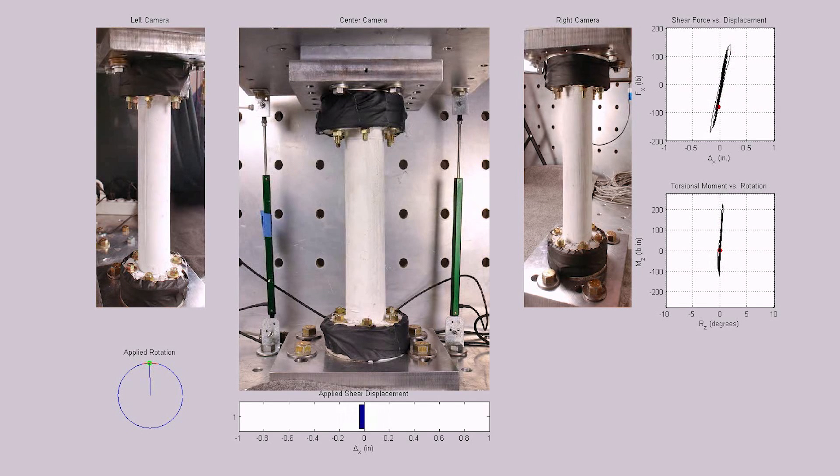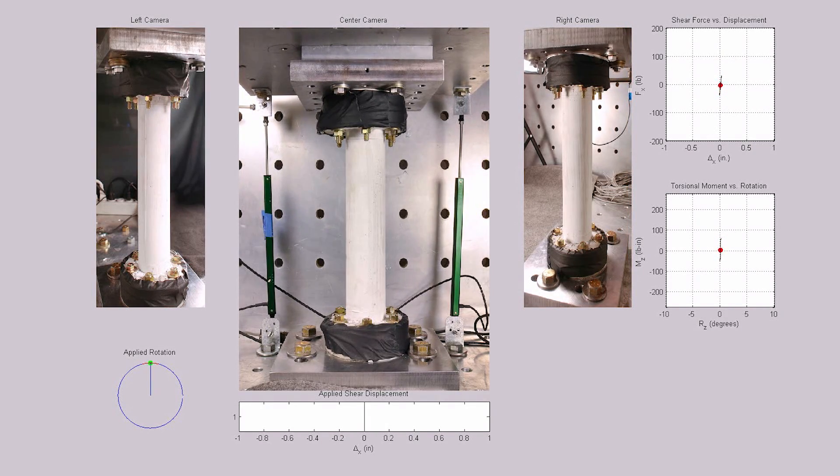The applied displacements and rotations, along with the resulting forces and torsions, can be seen in the graphs on the right. All graphs and plots of imposed movements are active and display the response of the specimen to both types of loading.